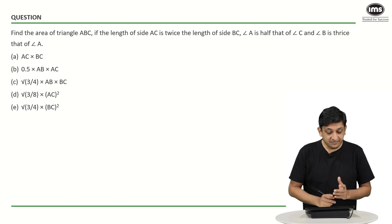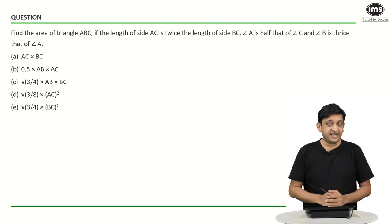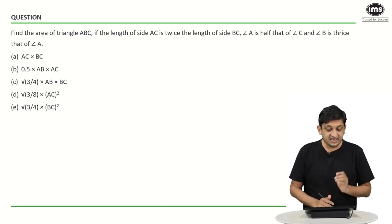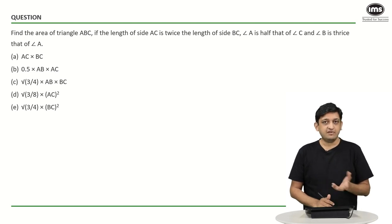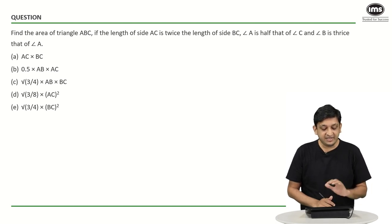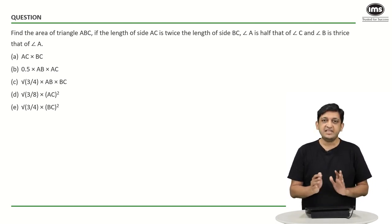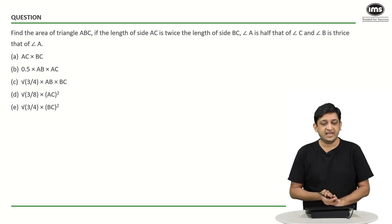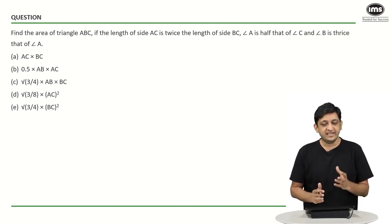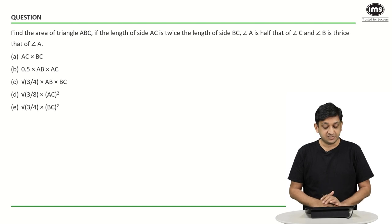Now, for the first question we have to find the area of triangle ABC. The length of side AC is twice the length of side BC. We also know that angle A is half that of angle C and angle B is thrice that of angle A. So we know everything about the three angles of the triangle, and we will try to figure out what the triangle looks like in terms of its angles first.